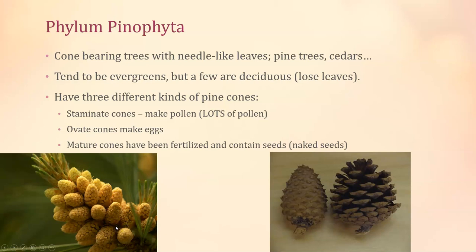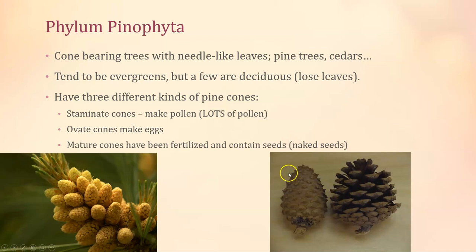Most people wouldn't see these and think 'pine cones,' but technically that's what they are. Then you have ovulate cones and mature cones. An ovulate cone has eggs inside that can be fertilized by sperm in the pollen. Once pollinated and fertilized, the scales open up and it becomes a mature cone — so think of it as unfertilized versus fertilized pine cone.